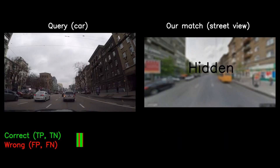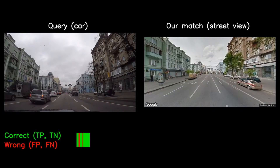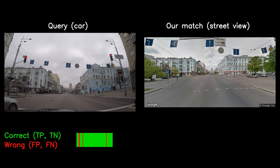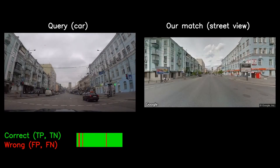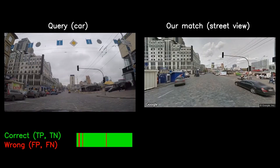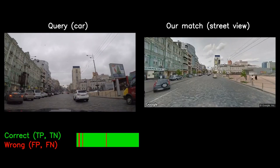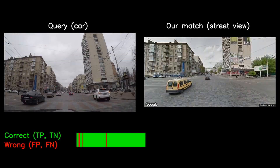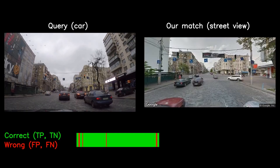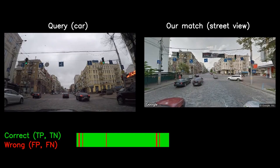Since sequences in the reference map can be selected independently, for the next experiment we match the sequence collected with the car against Google Street View images. By using images from Google Street View or other publicly available sources, we can skip the costly mapping phase. This setup is, however, even more challenging than the previous one, as the sequences differ in viewpoint, season, and time of day.